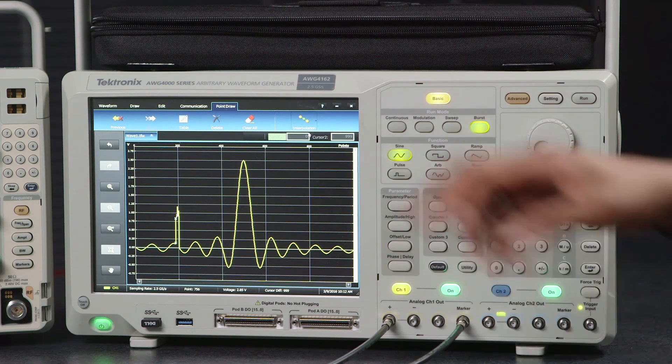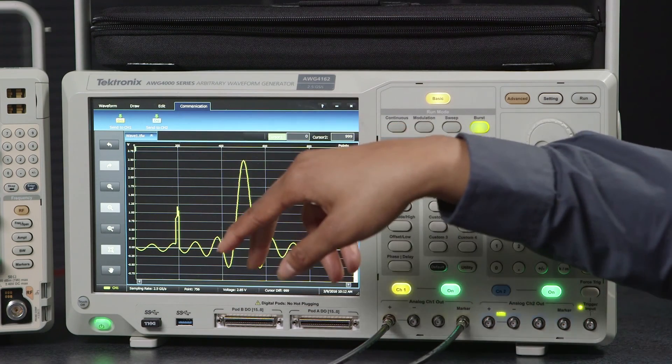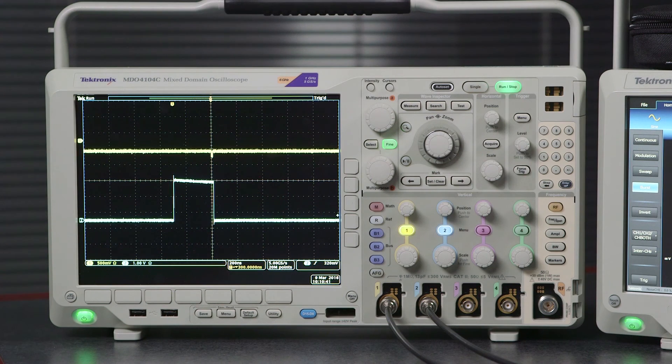Once we're ready to output I go to the communication tab and send it through channel 1. As you can see the waveform that we created on the AWG 4000 is output on the MDO 4000.